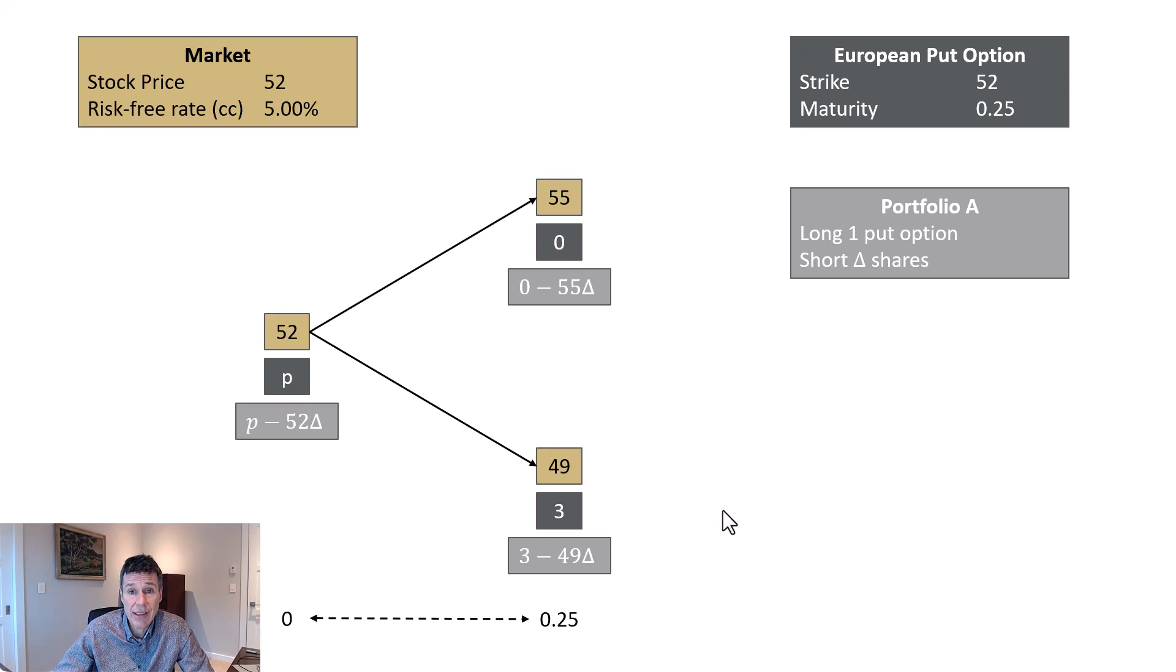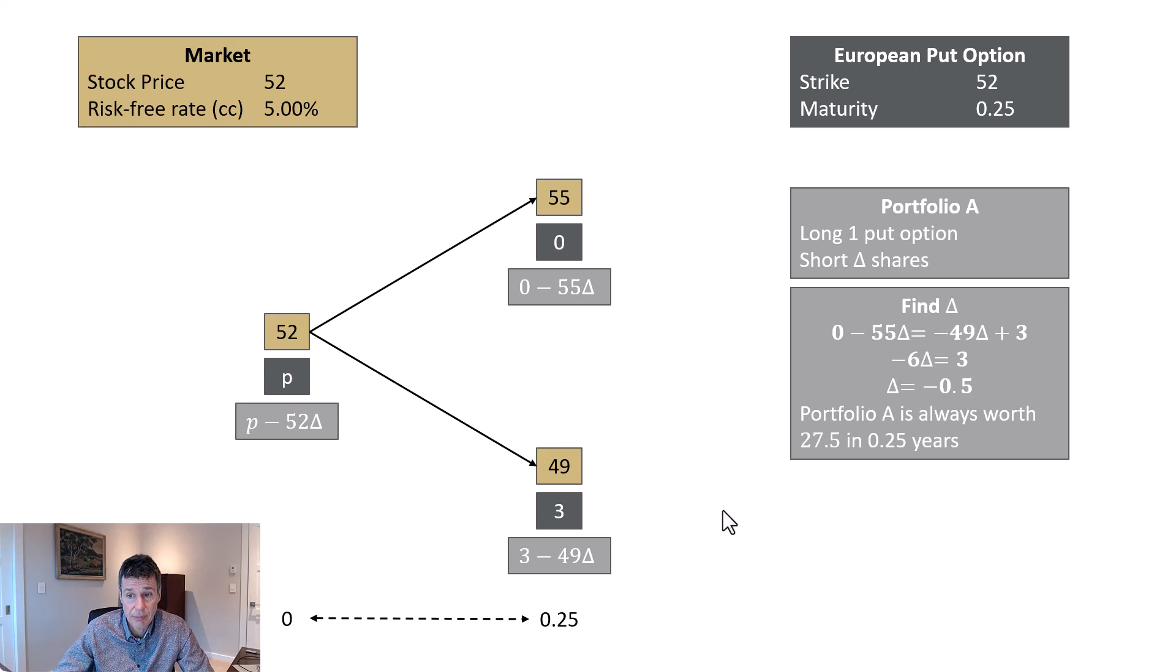We want to be indifferent to whether the stock goes to 55 or 49. So what do we do? We set these two things equal to each other and solve for delta. So 0 minus 55 delta equals 3 minus 49 delta. So negative 6 delta equals 3, or delta equals negative 1/2. First we have to talk about what does it mean to be short negative 1/2 shares. Well, being short negative 1/2 shares means actually you're long half a share. You own half a share.